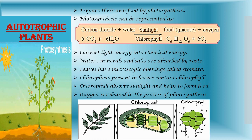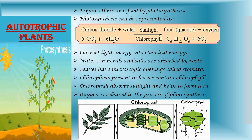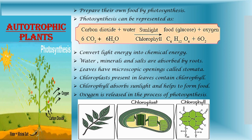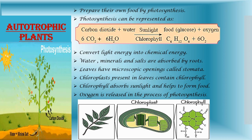That is: 6CO₂ + 6H₂O, in the presence of sunlight and chlorophyll, forms C₆H₁₂O₆ and 6O₂ is given out. That means carbon dioxide plus water, in the presence of sunlight and chlorophyll, produces glucose and oxygen is given out.